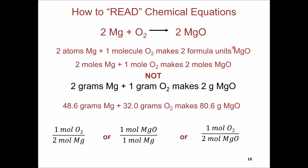Or it holds the same ratio if you consider it in terms of moles: two moles of magnesium will react with one mole of oxygen molecules to make two moles of magnesium oxide.